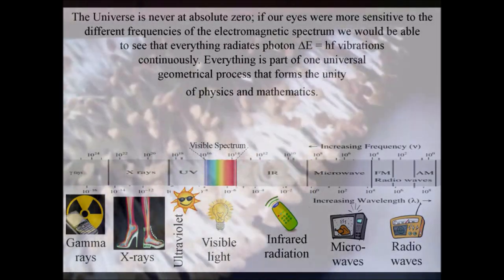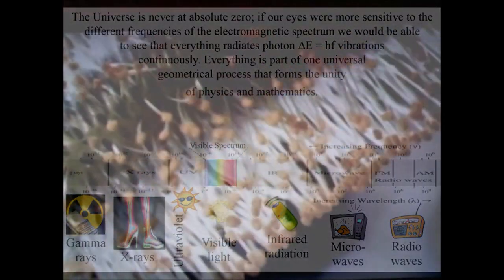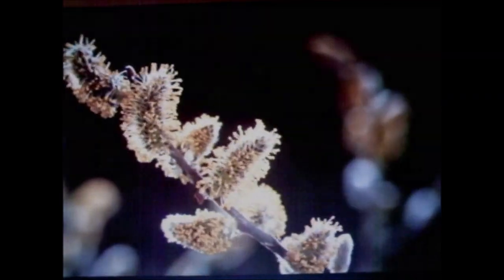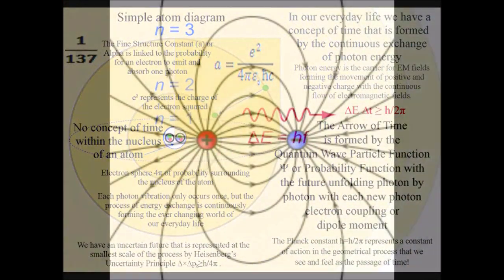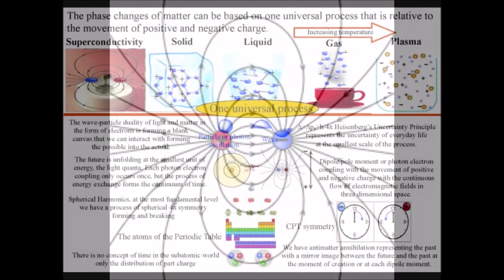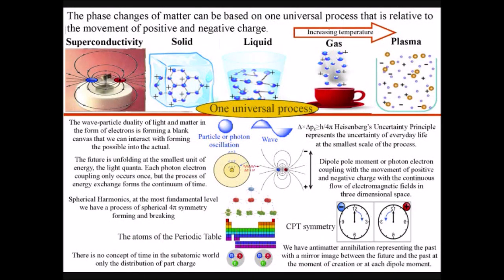This is an emergent process unfolding light photon by light photon with the movement of positive and negative charge. Such a process is relative to temperature and the phase changes of matter. At high temperature in the form of plasma,